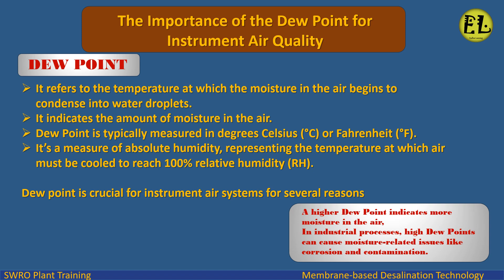The importance of the dew point for instrument air quality: dew point refers to the temperature at which the moisture in the air begins to condense into water droplets. It indicates the amount of moisture in the air. Dew point is typically measured in degrees Celsius or Fahrenheit. It is a measure of absolute humidity, representing the temperature at which air must be cooled to reach 100% relative humidity (RH). Dew point is crucial for instrument air systems for several reasons.